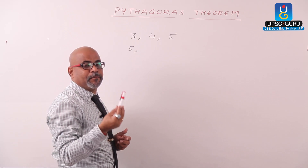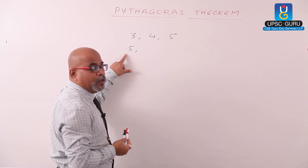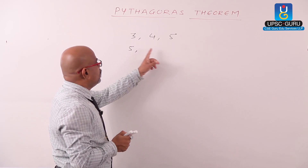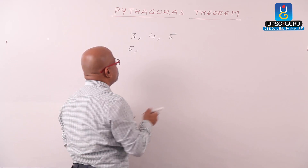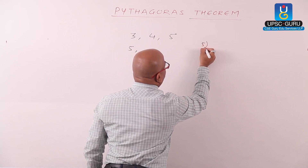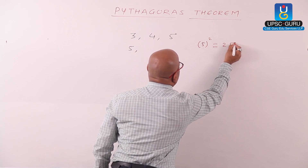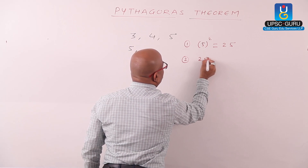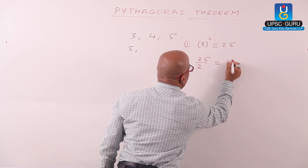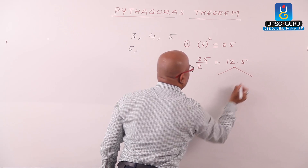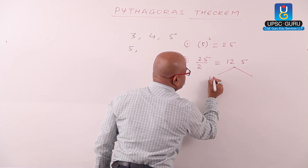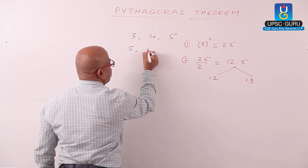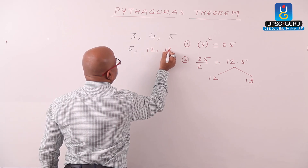We see a Pythagorean triplet in which the smallest number is an odd number. To find the remaining two numbers: first step — square this number, 5 squared gives us 25. Second step — divide 25 by 2, we get 12.5. Now 12.5 is the value between 12 and 13. Therefore the other two numbers of the triplet are 12 and 13.